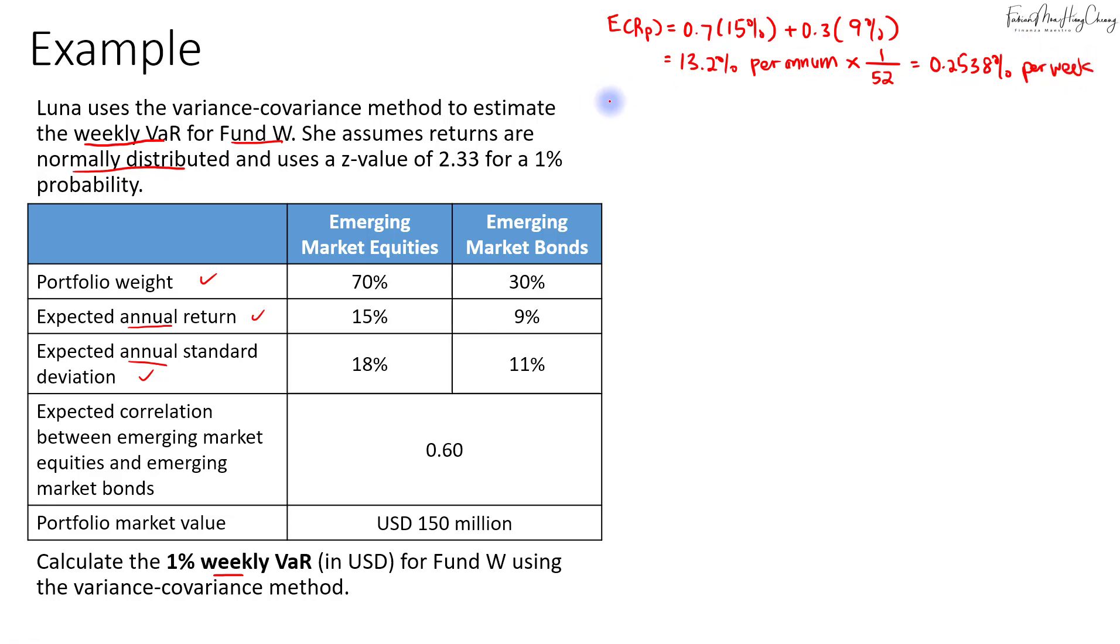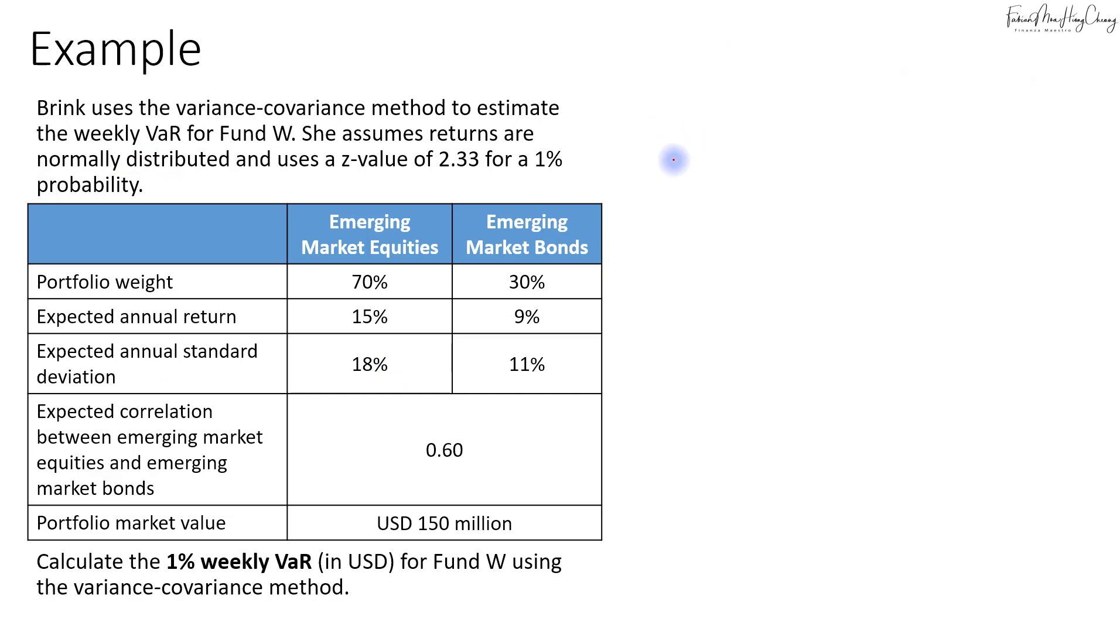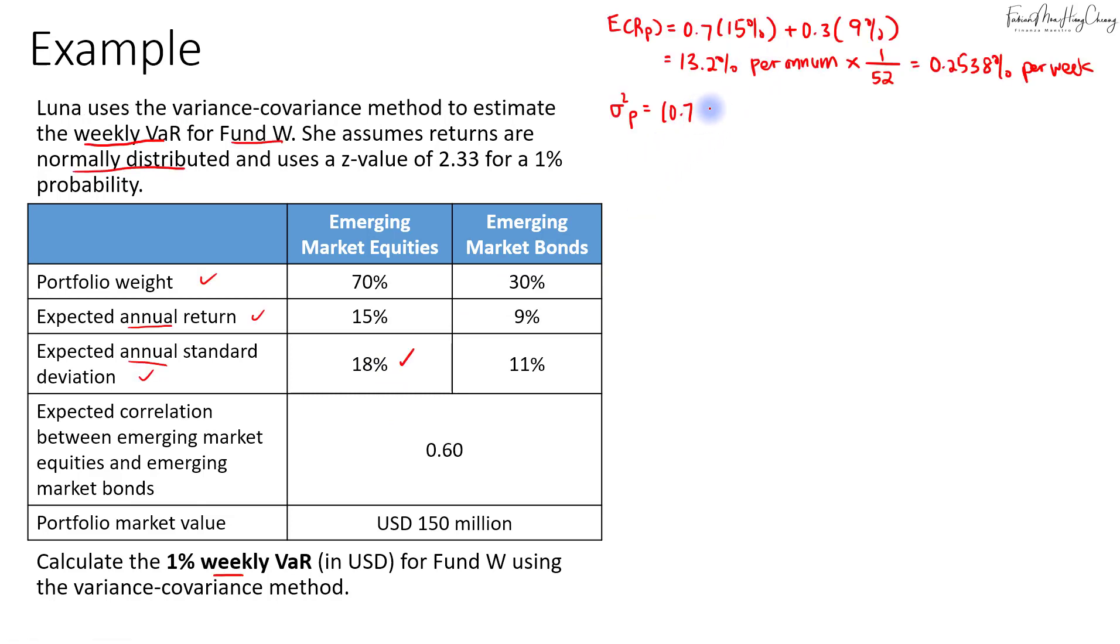Then we'll calculate the variance of the portfolio. To calculate the variance of a two-asset portfolio, we'll take 70% times 18% squared, plus 30% multiplied by 11% squared, and then for the covariance term that will be 2 multiplied by the weightages 70% and 30%, and then we multiply by the covariance, which is the correlation 0.6 multiplied by the standard deviation of each asset class.